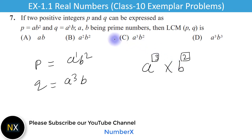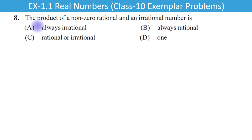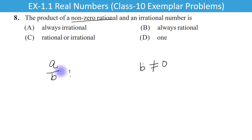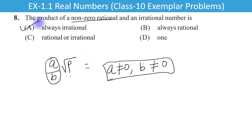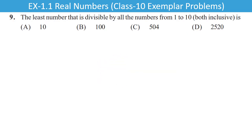Question 8: The product of a non-zero rational number and an irrational number is — non-zero rational number ka matlab yadi rational number ko A upon B ke form mein likhen to B non-zero hota hai, aur yahan given hai ki A bhi not equal to 0 hai. Yadi is number mein koi irrational number se multiply karen, suppose P ek prime number hai, to root P bhi irrational hoga. Is rational se multiply karne par result bhi irrational hoga. So option A is the right answer.